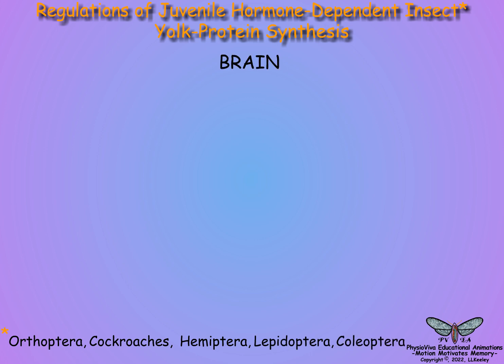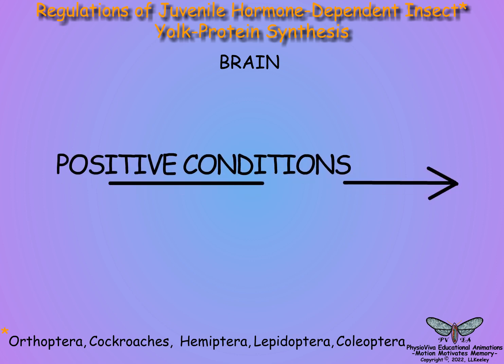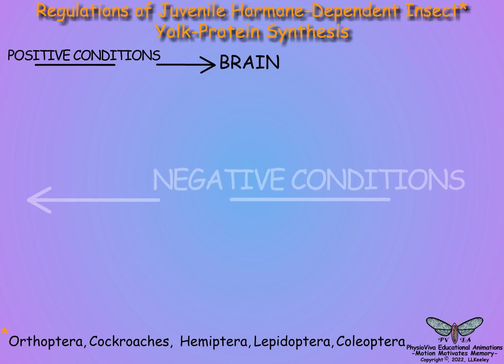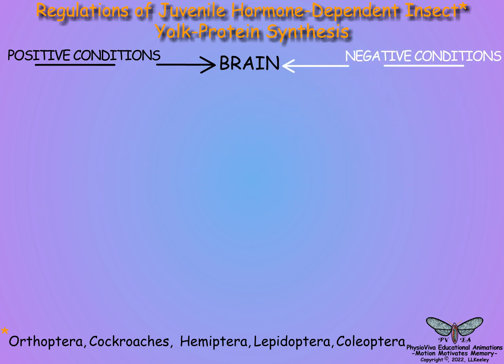Environmental and physiological status of adult females encourage juvenile hormone production that promotes vitellogenesis and reproduction. In the following figures, items shown in black promote reproduction, whereas those shown in white suppress reproduction.